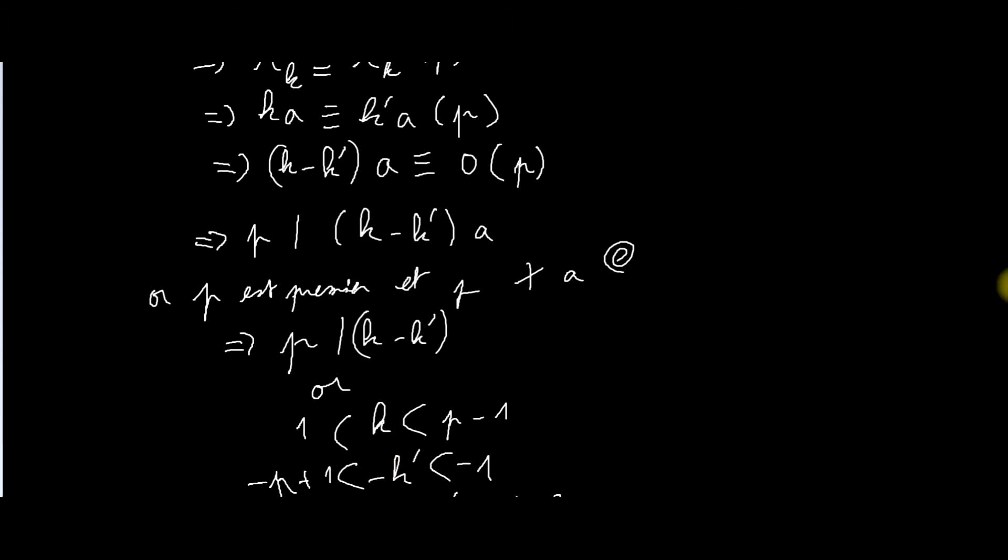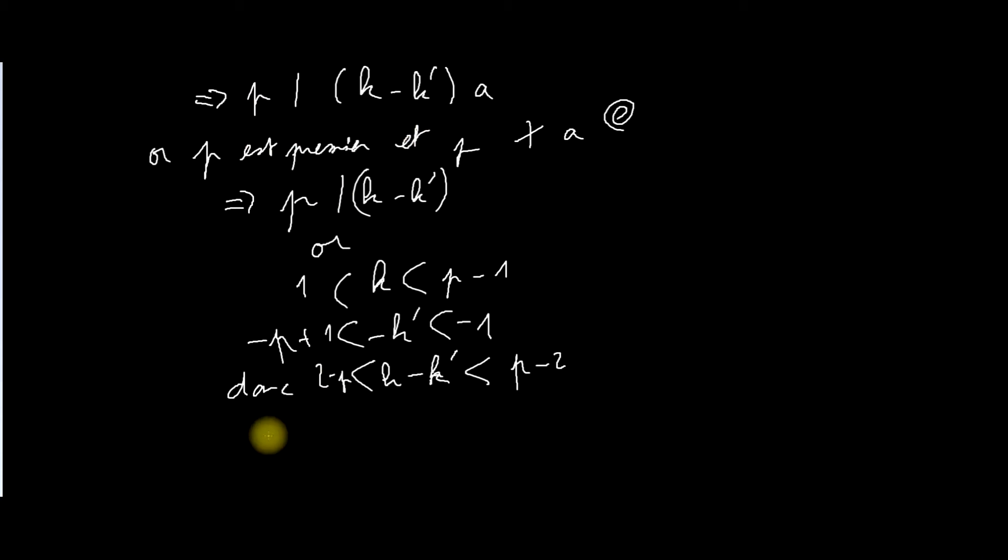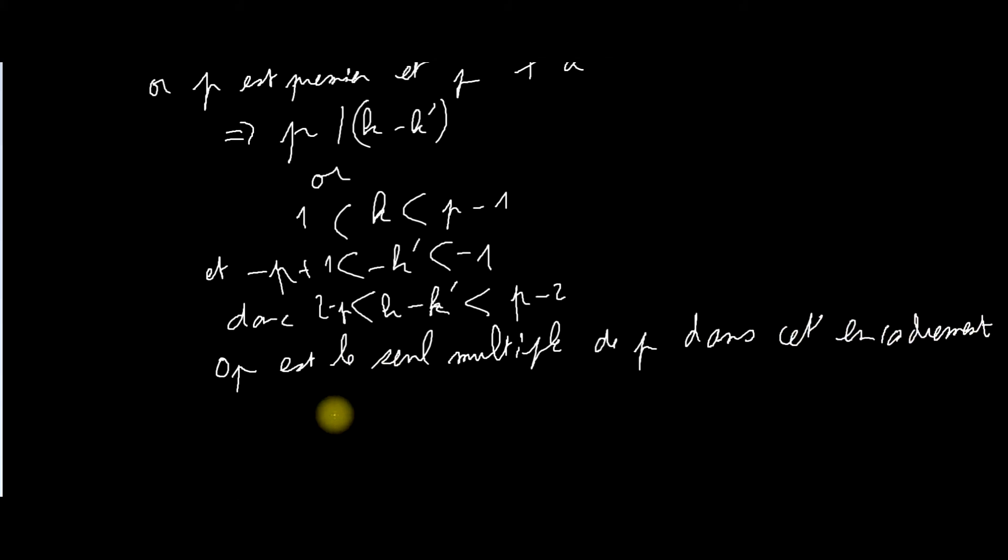Or, K est compris entre 1 et P moins 1, tout comme K'. Donc, si je fais la soustraction entre les deux, j'obtiens que K moins K' est compris entre 2 moins P et P moins 2. C'est-à-dire en valeur absolue, compris entre 0 et P moins 2. 0P, c'est donc le seul multiple de P qui est dans cet intervalle. 0P, c'est 0, hein. K moins K' égale 0. K égale K'. Bonjour.